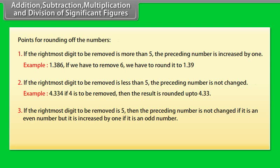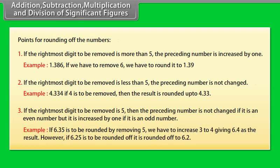3. If the rightmost digit to be removed is 5, then the preceding number is not changed if it is an even number, but it is increased by 1 if it is an odd number. Example: If 6.35 is to be rounded by removing 5, we have to increase 3 to 4 giving 6.4 as the result. However, if 6.25 is to be rounded off, it is rounded off to 6.2.